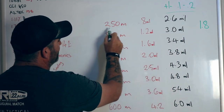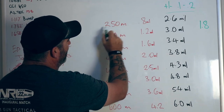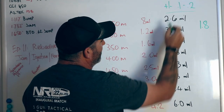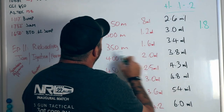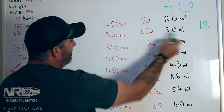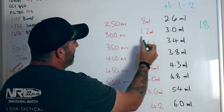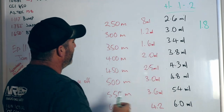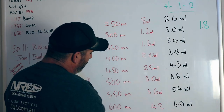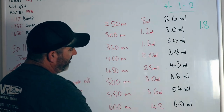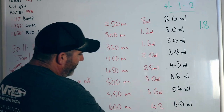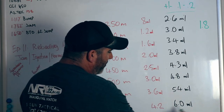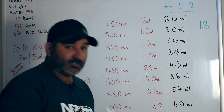Remember, the end game is to hold 2.5 for 250 meters — so that falls within 0.1. For 300 meters, if I add 1.8 to my current 1.2 it gives me 3 mils — that's dead on. We'll do that for all ranges within the bracket. At 600 meters, if I add 1.8 to 4.2, I'm getting 6 mils — we've achieved our goal.